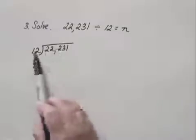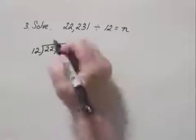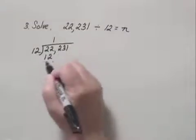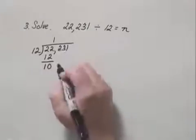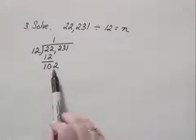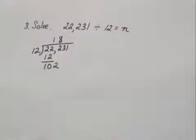And we think, does 12 go into 2? No. Does 12 go into 22? Yes, one time. 1 times 12 is 12. And we subtract, and we get 10. And then we bring down the next digit, which is 2. 12 goes into 102 eight times. 8 times 12 is 96.